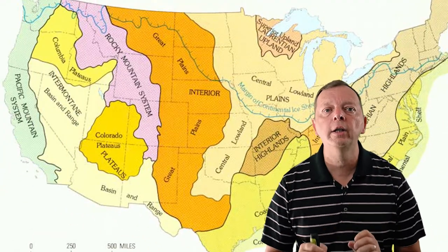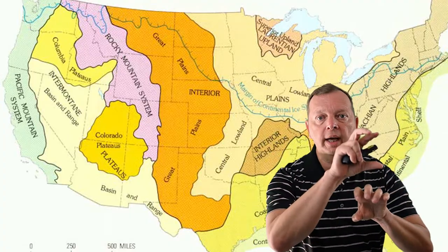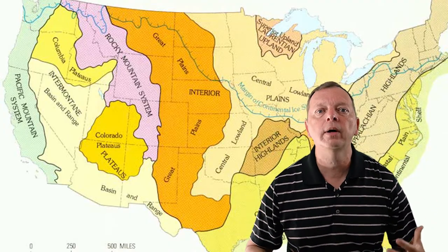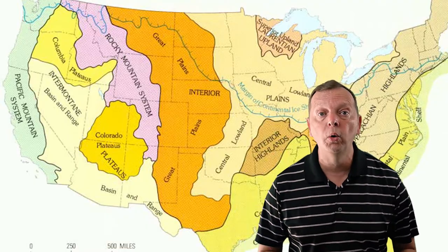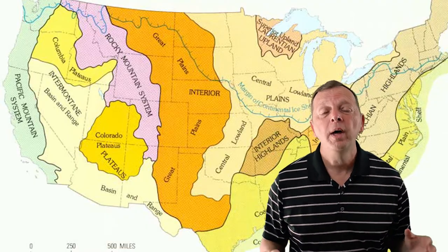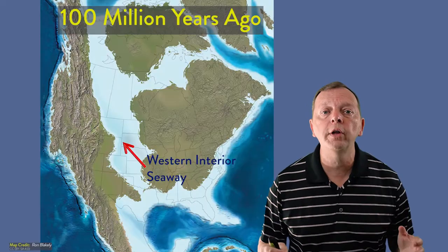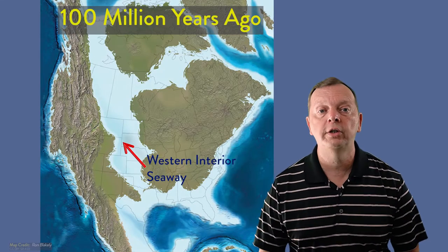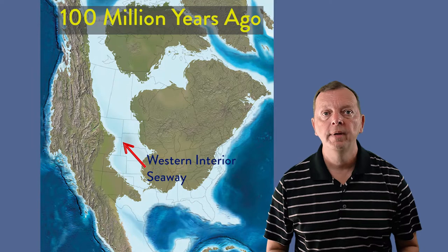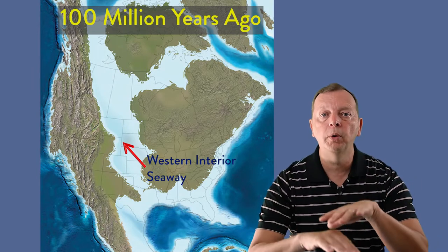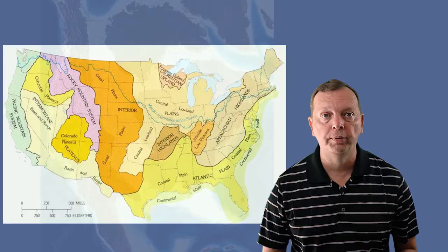You might be thinking: how can the Great Plains, which runs from northern Texas through Kansas and up into the Dakotas, be a coastal plain when there isn't a single ocean nearby? Well, there isn't one now, but around 100 million years ago the Great Plains was on the coast of the Western Interior Seaway that divided North America. When that sea receded, it exposed its ocean floor, which we now call the Great Plains.